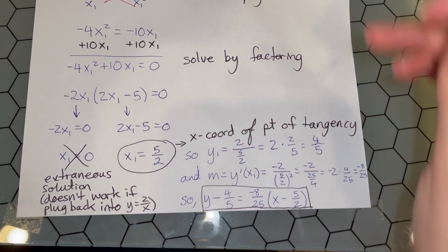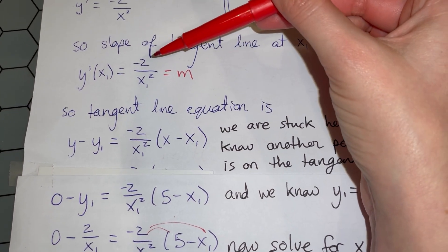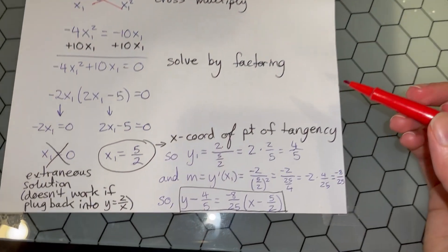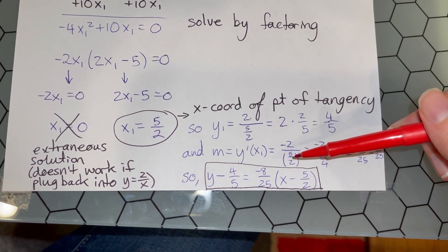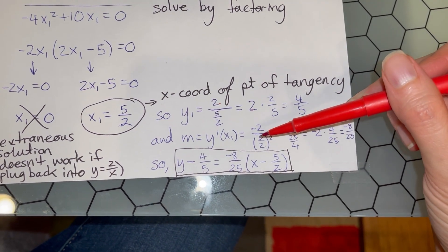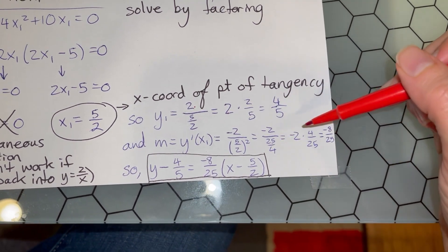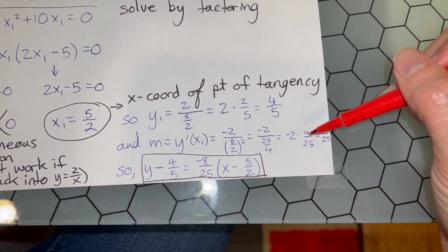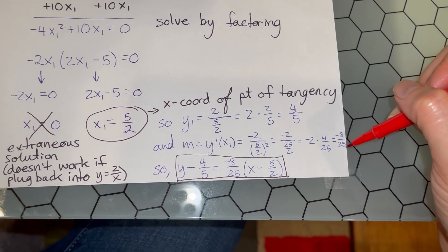Remember we already built the formula for the slope: -2/x₁². We can get our slope now. It's -2/(5/2)² = -2/(25/4). You square a fraction by squaring the top and bottom. Dividing by a fraction is multiplying by the reciprocal, so we multiply straight across: -2 × 4/25 = -8/25 as the slope of the tangent line.